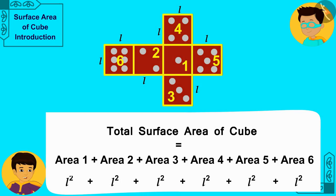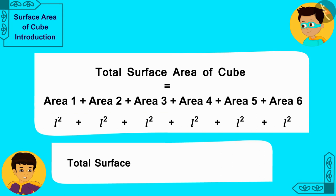And look Thomas, all these faces are exactly the same. Therefore, the total surface area of the cube will be 6 times the square of L where L is the length of each side of the cube.